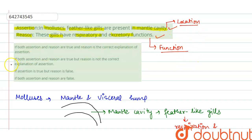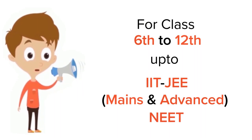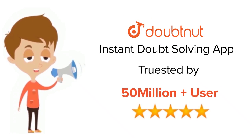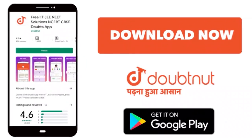But both are correct, so our correct option is: Both assertion and reason are true, but reason is not the correct explanation of assertion. So option B is our answer. Thank you. For class 6-12, IIT-JEE and NEET level, trusted by more than 5 crore students, download Doubtnet today.